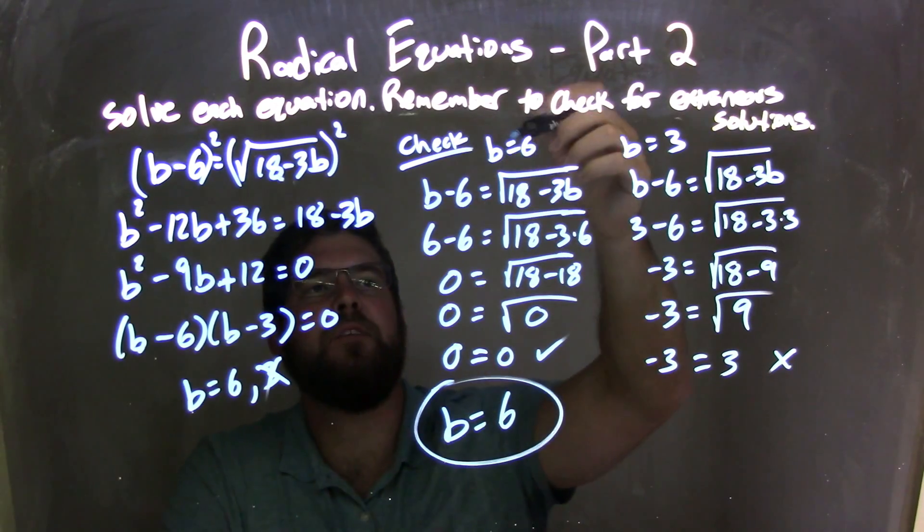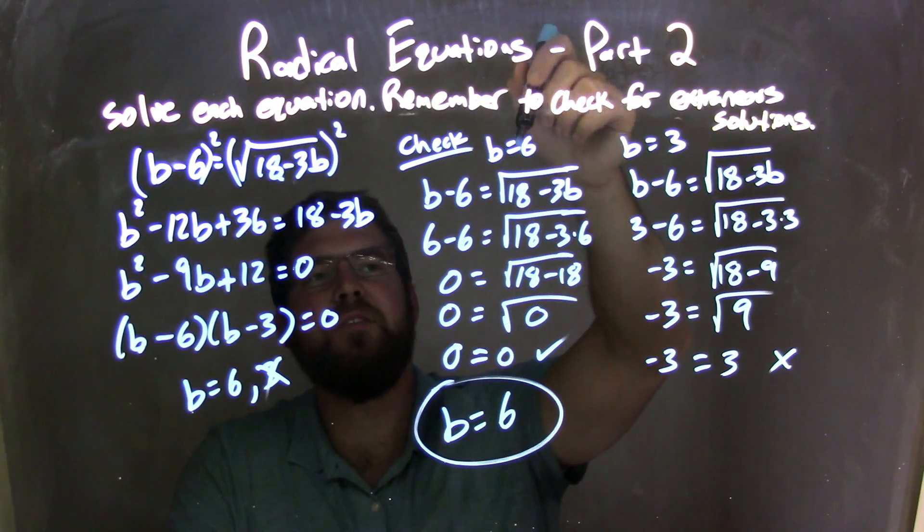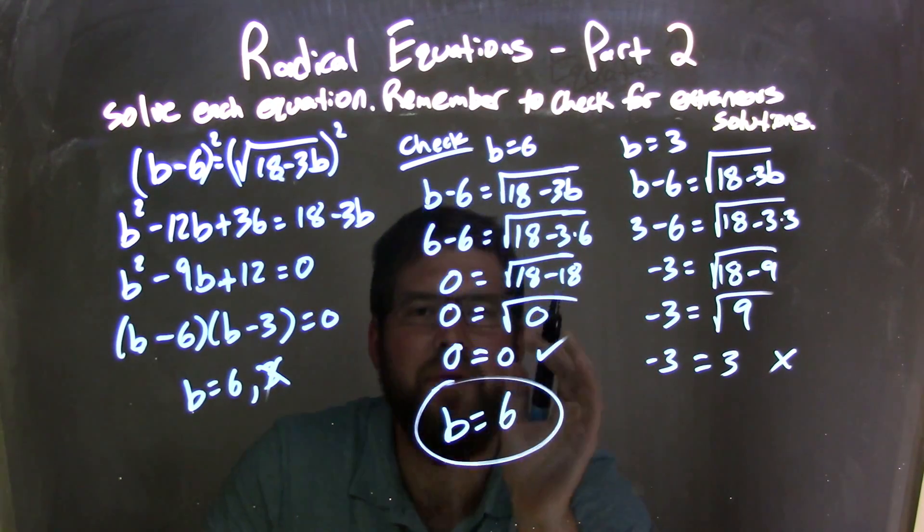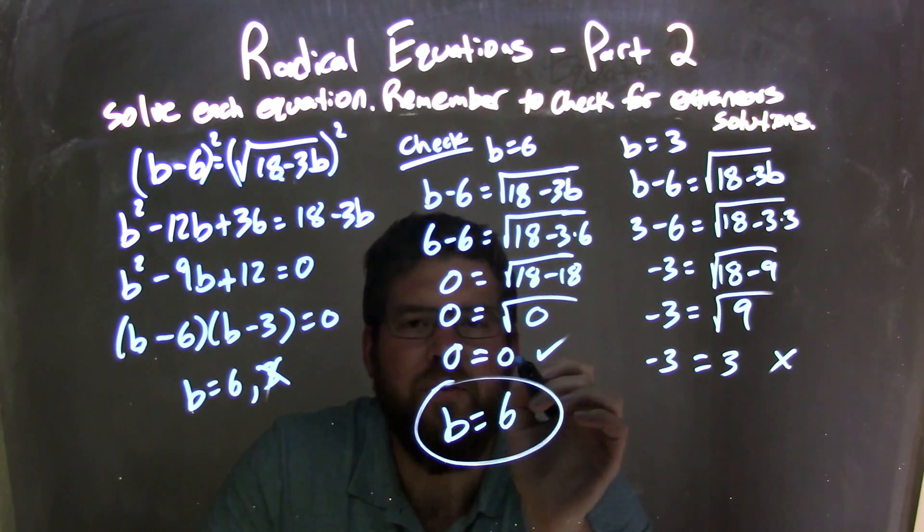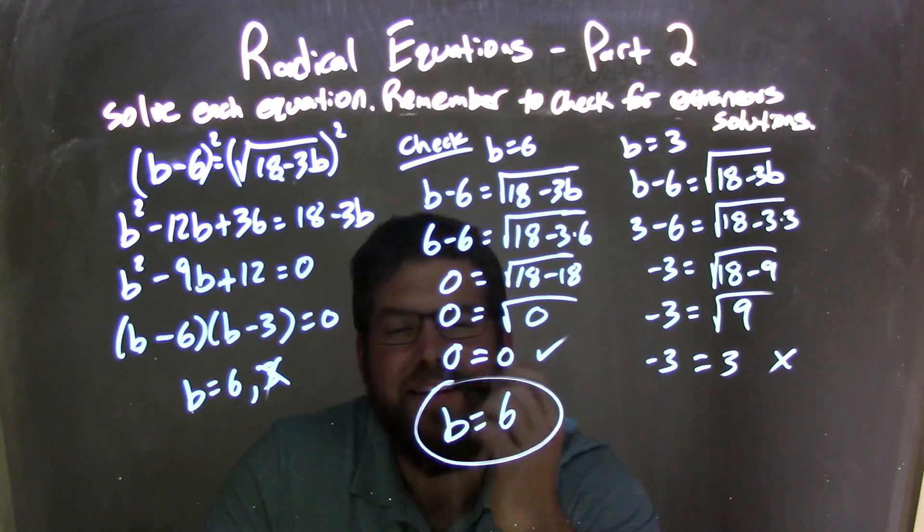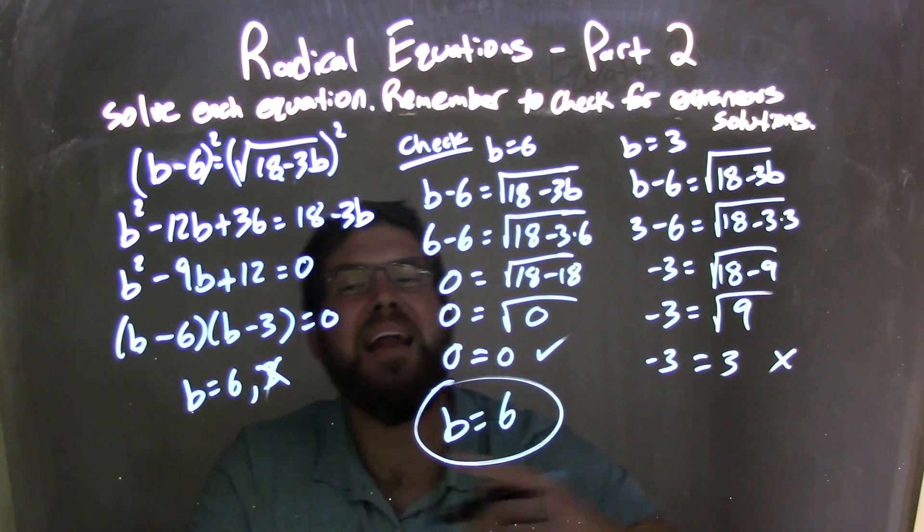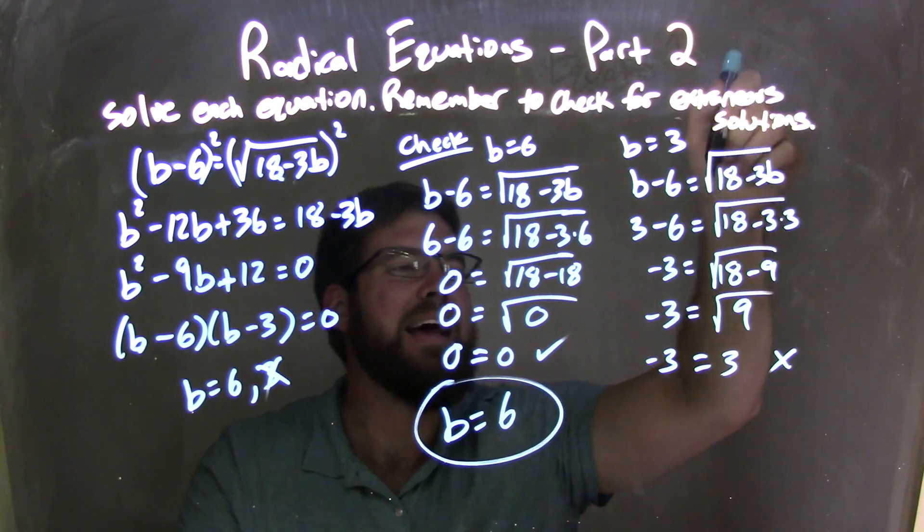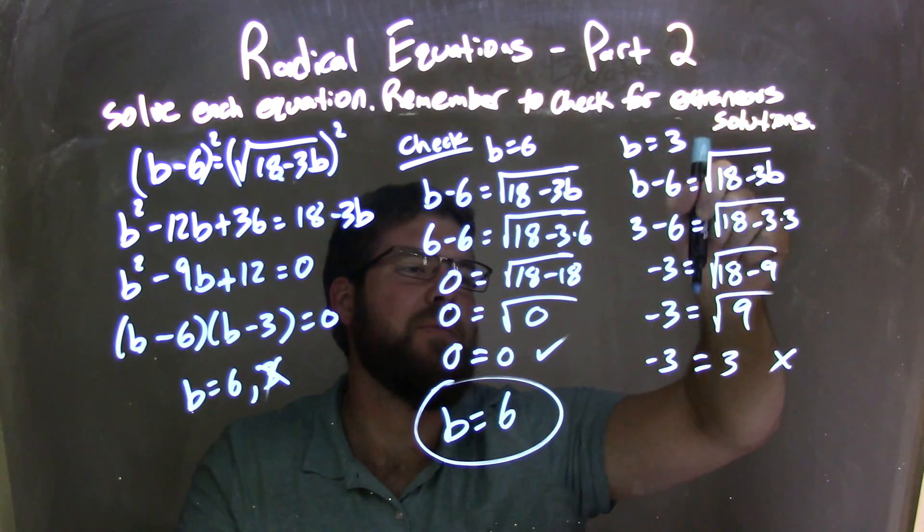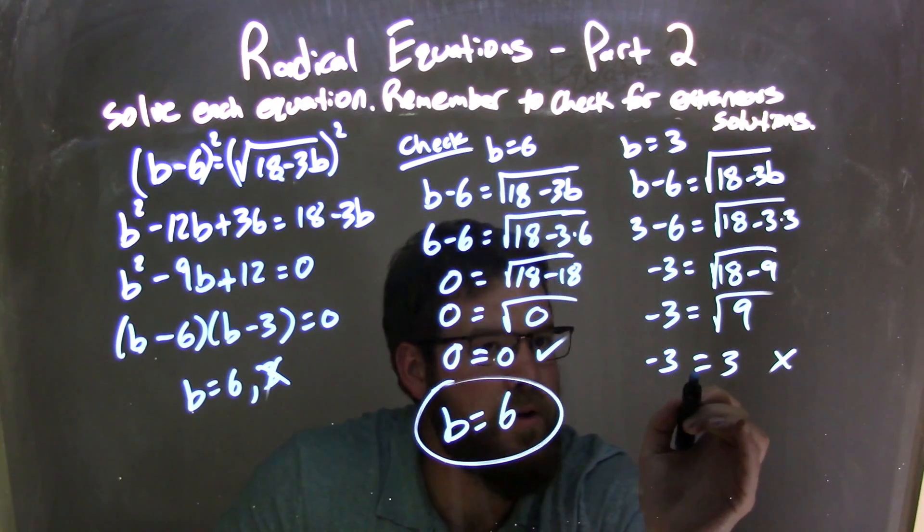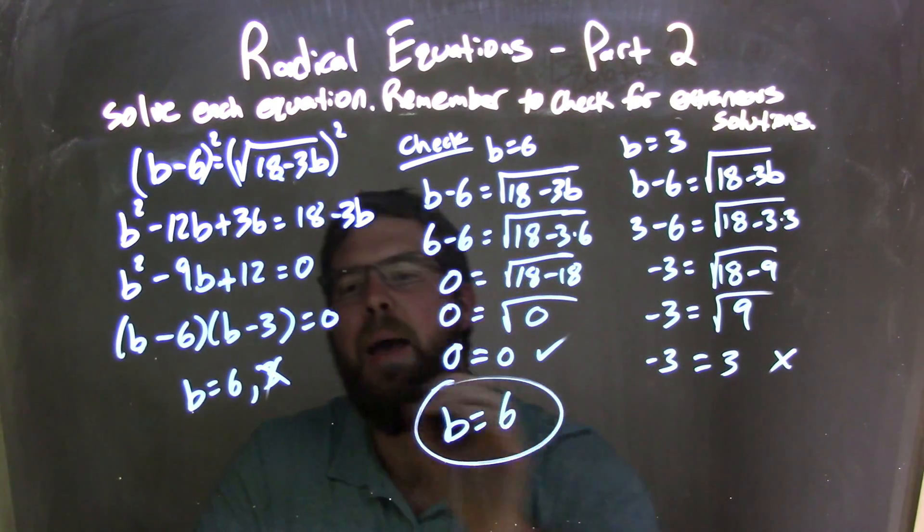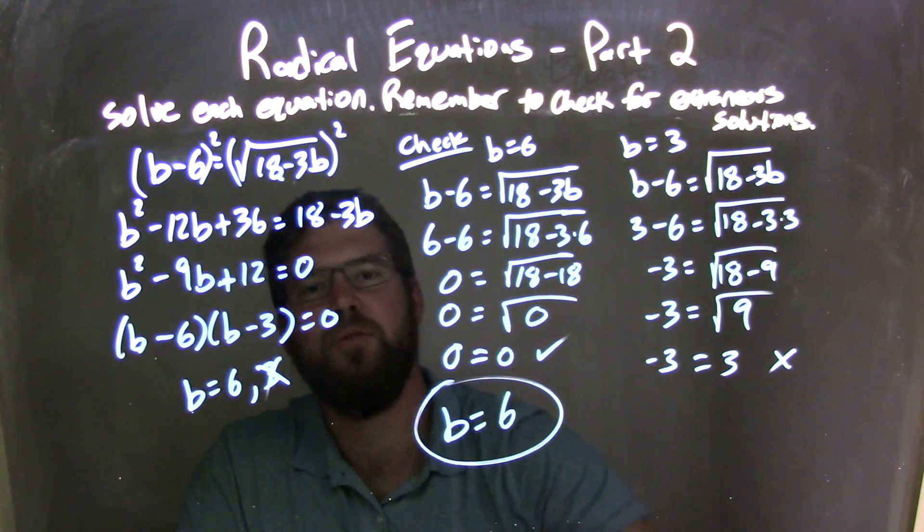Let's check those. We checked the first one, plugged b to be 6, plugged 6 in for all the b's of our equation, simplified left and right, kept them on either side, and we got 0 equals 0. That's a true statement, and so 6 is a true solution, not extraneous. But I did the same thing with b equals 3. I plugged 3 in for both of the b's and I simplified. I got close, but no cigar here. Negative 3 equals a positive 3, that is not a true statement, making 3 our extraneous solution, as written up there.